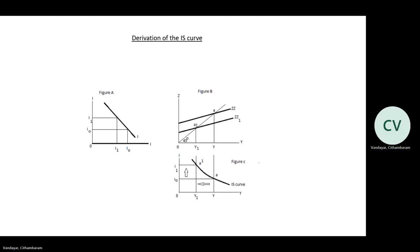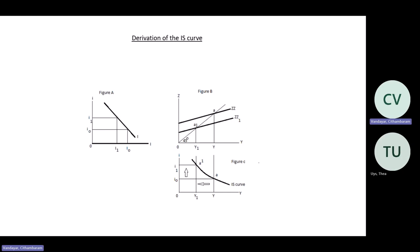To find another point to enable us to draw the IS curve, we go back to figure A and change the interest rate. Let's assume interest rates increase from I0 to I1. We know that an increase in interest rates will result in a decrease in investments because of the high cost of borrowing. In the goods market, the decline in investment spending decreases the demand for goods and services. Therefore, there'll be a parallel downward shift in the ZZ curve to ZZ1, because of a decrease in the demand for goods. So an increase in interest rates from I0 to I1 will result in a decrease in investments.